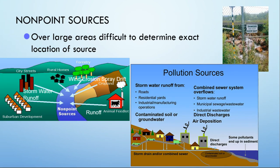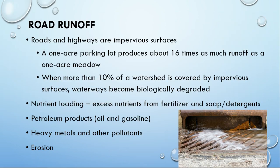Non-point sources are things occurring over large areas — they're diffuse, and it's really difficult to determine the exact location. Anything that's going to be runoff is one of those things, whether it's from a crop, agricultural runoff, from feedlots, or from cities where you have road runoff. Road runoff is anything coming off of an impervious surface, and that includes parking lots as well.